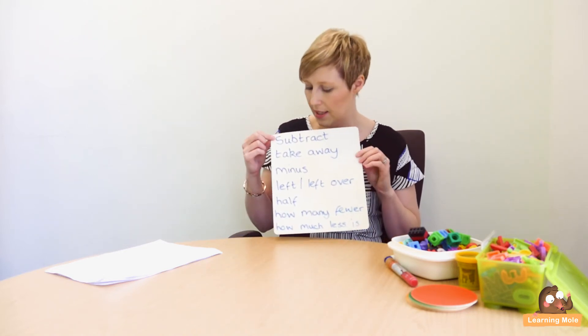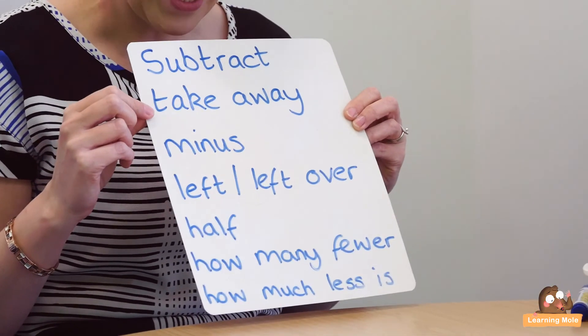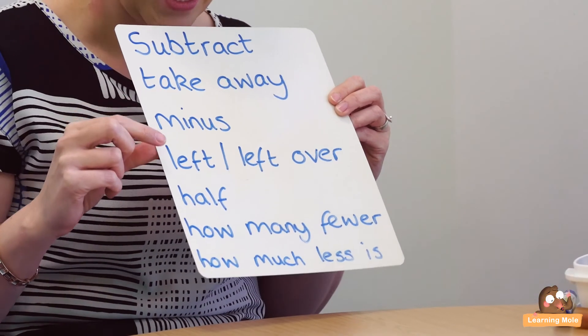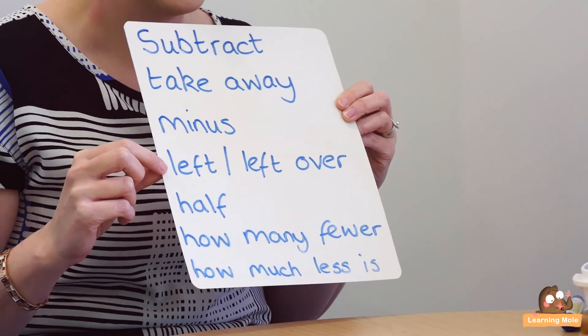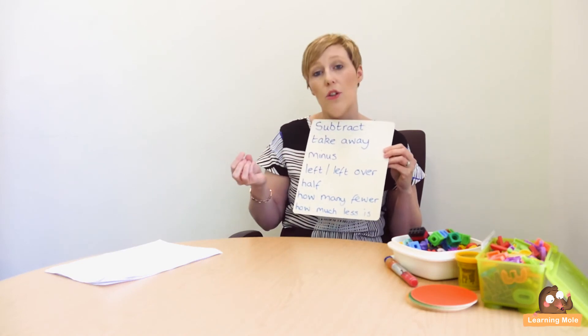So: four subtract two, what's four take away two, what's two less than four — all of that nice rich vocabulary that they will be coming across. So things like subtract, take away, minus, left, how many are left, how many are left over — and that will come into your story problems a lot.